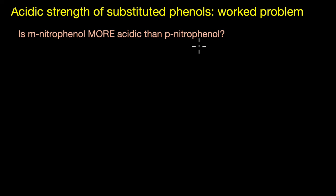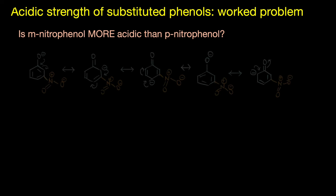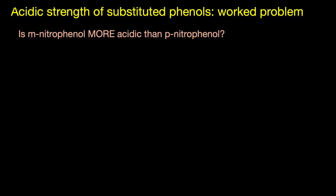The clue is to draw the resonance structures of the corresponding conjugate bases. The answer to this question is no — metanitrophenol is not more acidic than paranitrophenol.